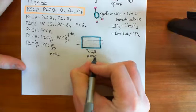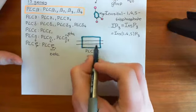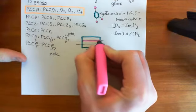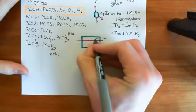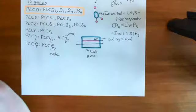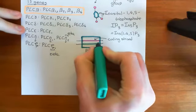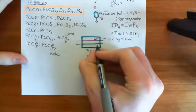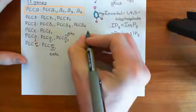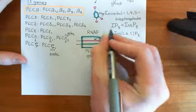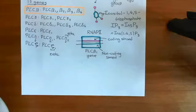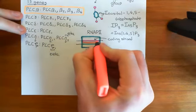One strand of the double-stranded DNA is used by RNA polymerase II to make the mRNA — this is known as the coding strand. The other complementary strand, not used by RNA polymerase II, is the non-coding strand. RNA polymerase II works along the coding strand and synthesizes a piece of mRNA that is complementary to it. This piece of mRNA is then going to be translated into protein.